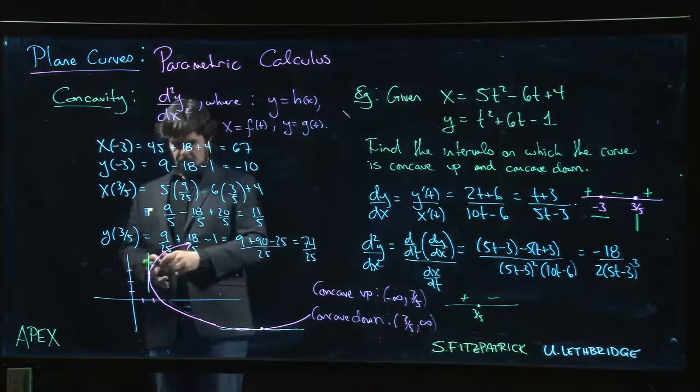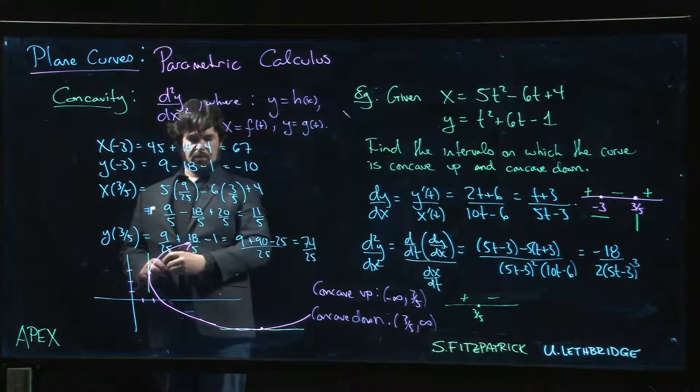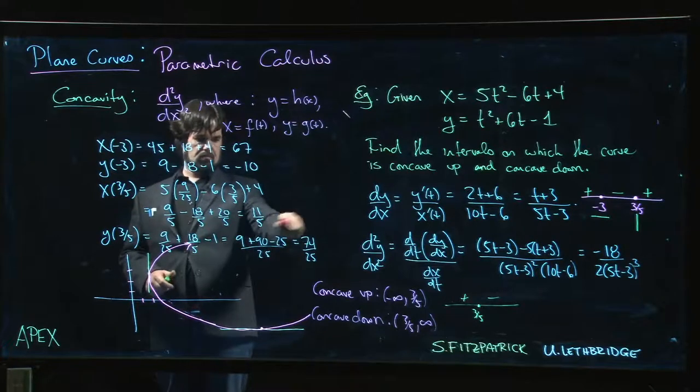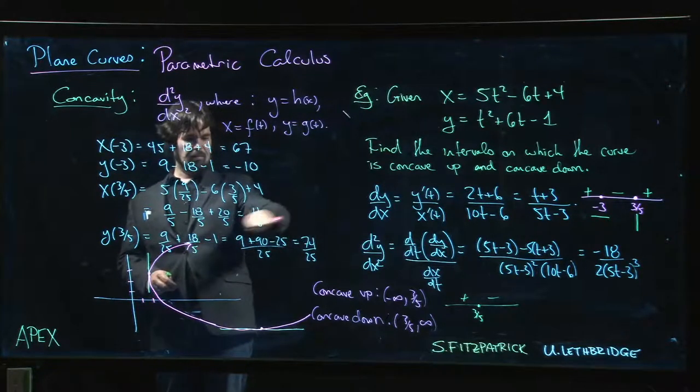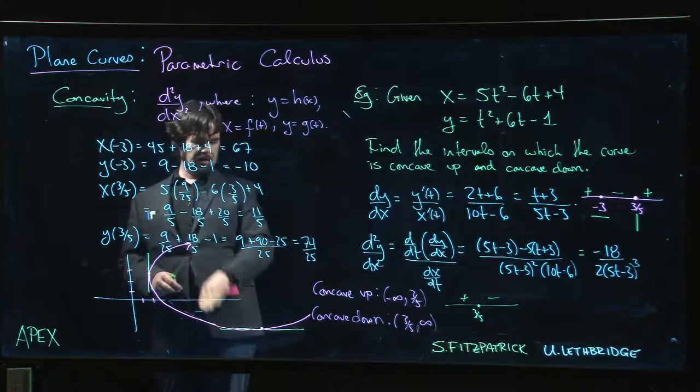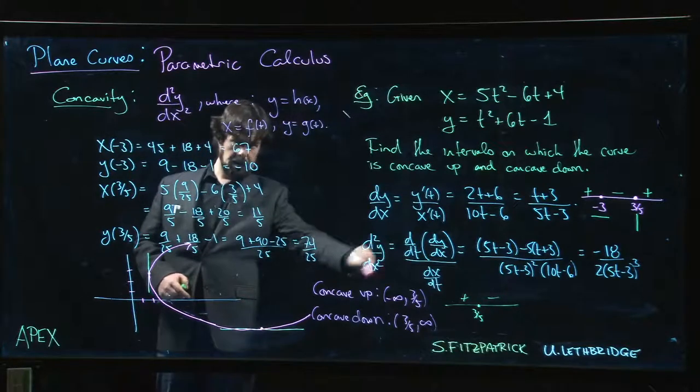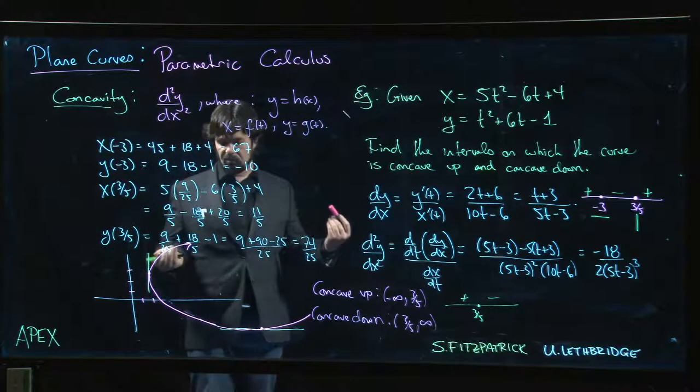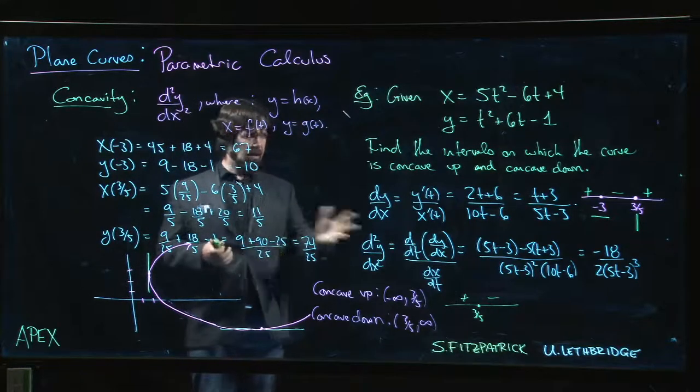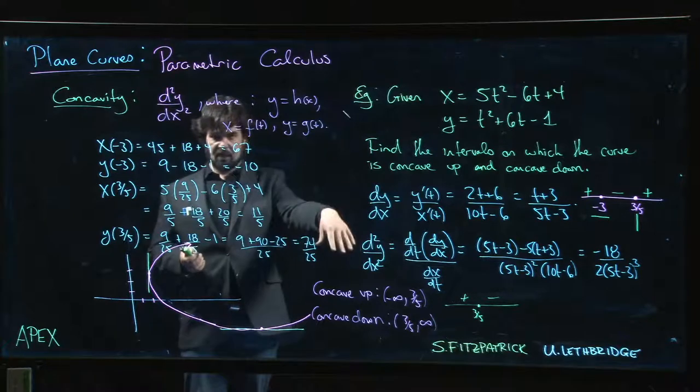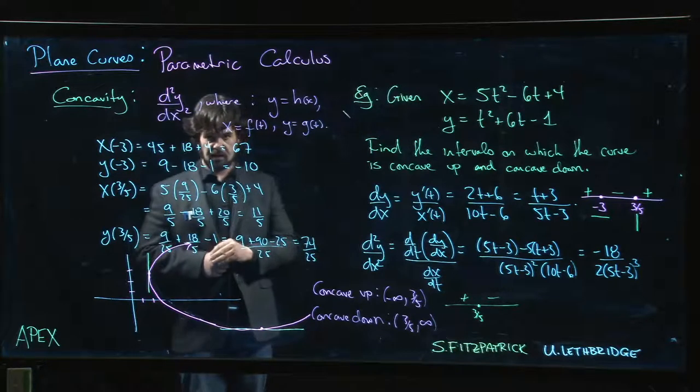So actually we expect that we should get something that kind of has a slope, we approach an asymptote with the slope of 1/5 there and also there. So it kind of goes off like that, goes off like that. So we can actually start getting an idea of what these parametric curves look like by computing first and second derivatives using parametric calculus.